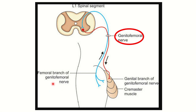The nerve responsible is the femoral branch of the genitofemoral nerve. When tapping on the medial aspect of the thigh, sensation travels to the spinal cord through the femoral branch of the genitofemoral nerve. This is a sensory nerve that enters the spinal cord through the posterior column and transmits the sensory information.